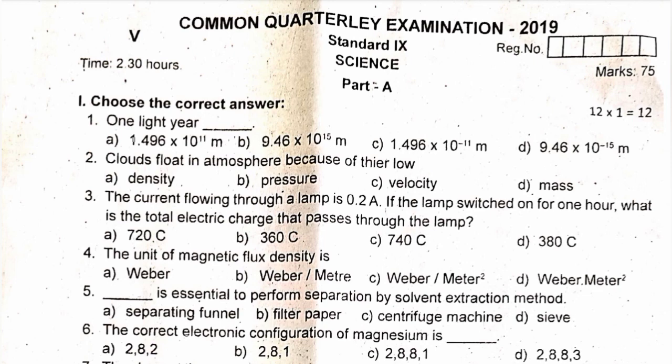Part A, Roman numeral I — choose the correct answer. Question 1: 1 light year. Question 2: Clouds float in the atmosphere because of their low [density]. Question 3: The current flowing through a lamp is 0.2 amperes. If the lamp is switched on for 1 hour, what is the total electric charge that passed through the lamp?